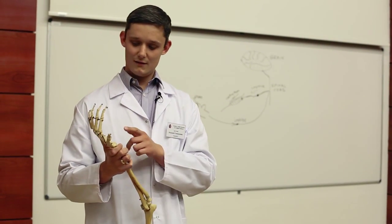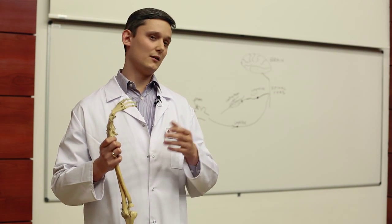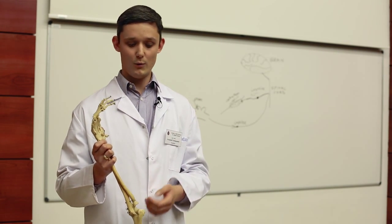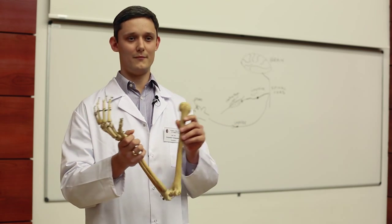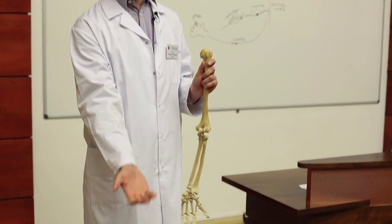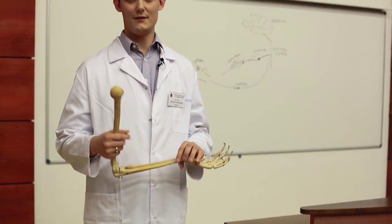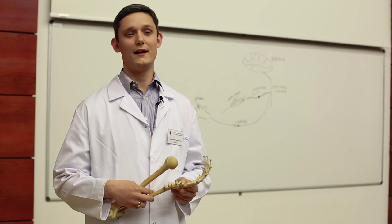For example movements of the hand which are very complex use up a large amount of the cortex, while movements in the arm use up way less space of the cortex than the hand itself.